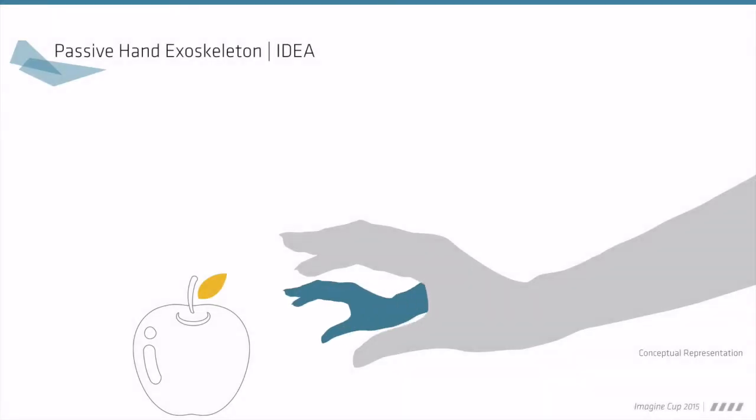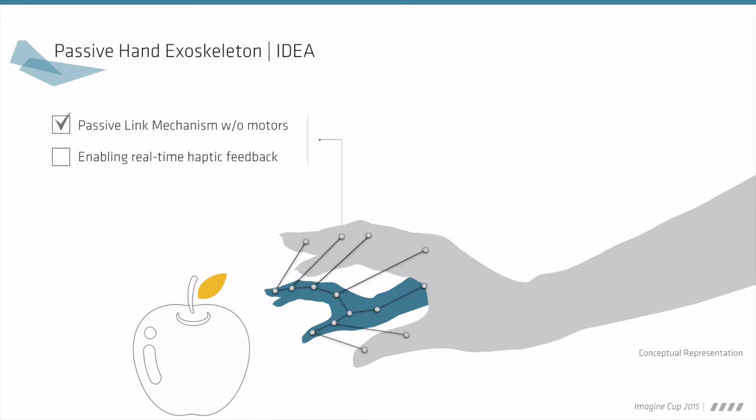This shows the conceptual representation of the exoskeleton. It consists of passive link mechanisms without motors, enabling real-time haptic feedback. Compared with CG-based interactions, the exoskeleton-based interface allows preservation of the existing environment and natural embodied interactions.